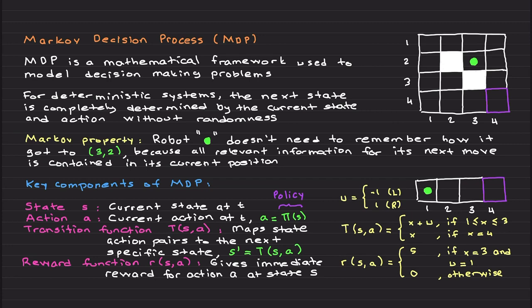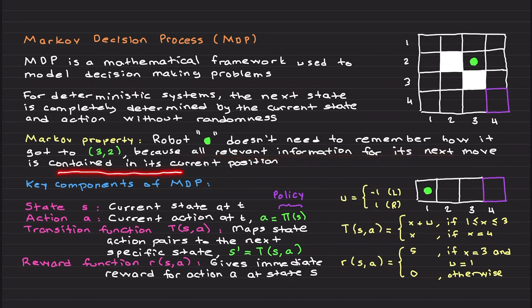Basically, the robot doesn't need to remember how it got to a particular square, because all relevant information for its next move is contained in its current position. Whether the robot came here one way or another doesn't matter — its current state and its current action determines the robot's next move. After summarizing this Markov property, let's look at the key components of the MDP.